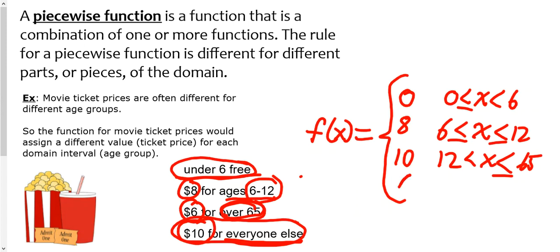And then the function is going to be equal to six when x is greater than sixty-five. And so that right there is a piecewise function. Again, depending on the domain, you get a different value.